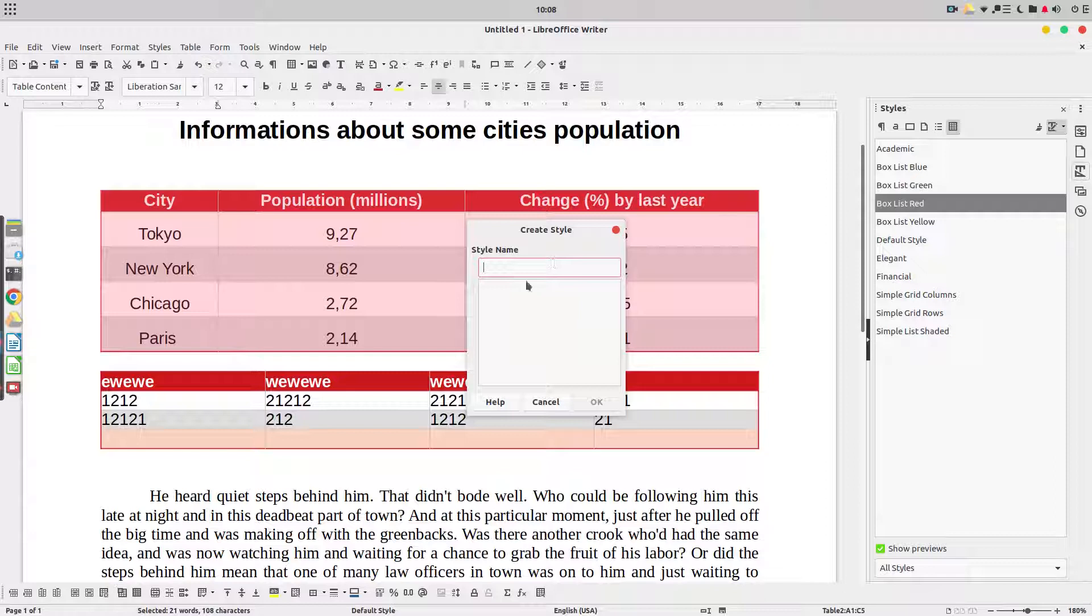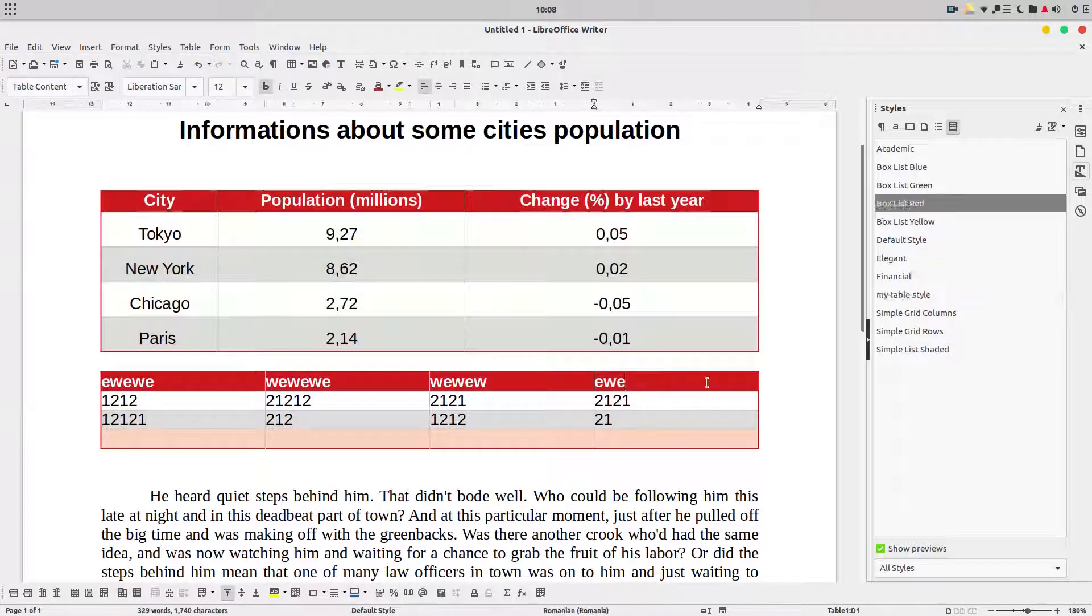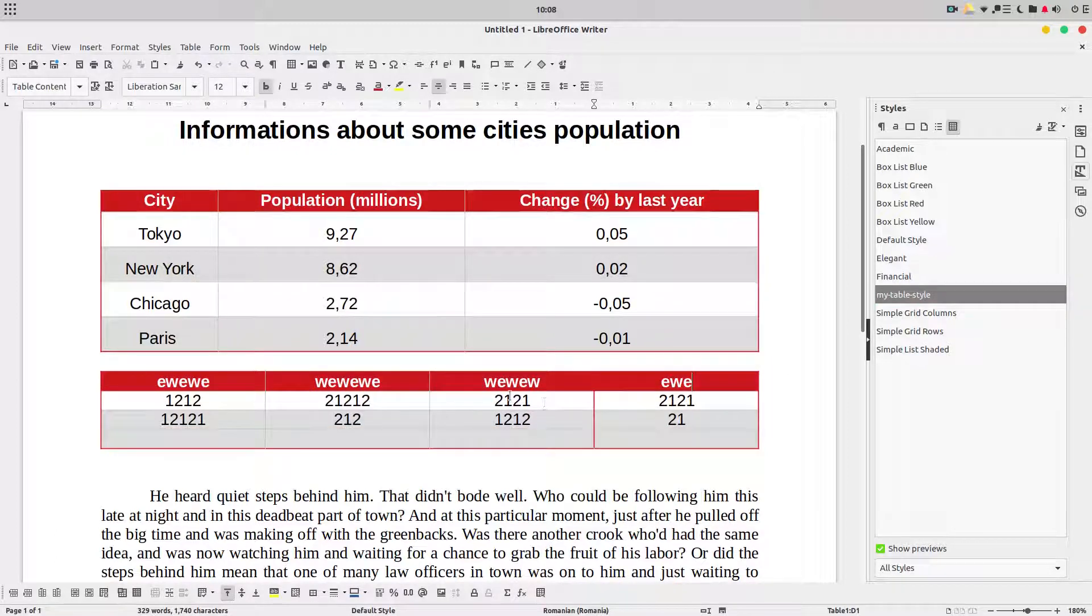So I have my table style. So now, if I have a second table, I just need to click on that. And I have the same style here and there. Everything is centered.